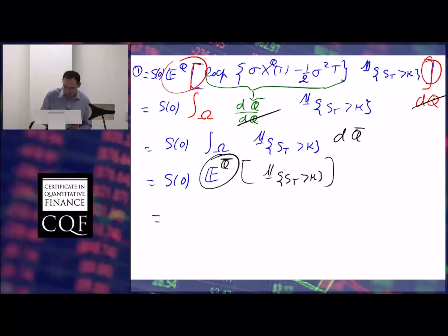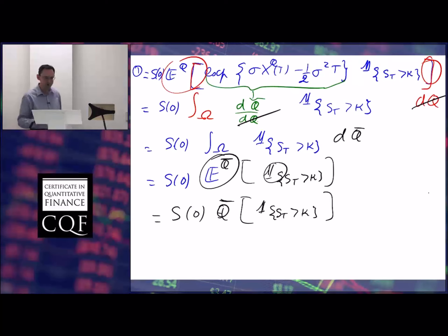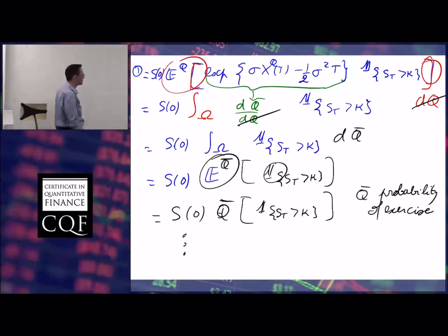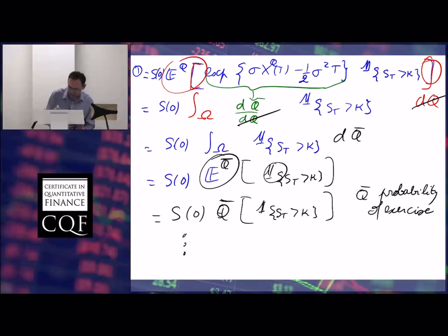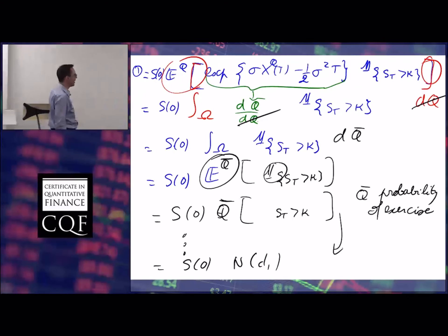We can rewrite that as S0 times the expectation under Q-bar of the indicator function. The expected value of an indicator function is a probability, so that's S0 times the probability under Q-bar that our stock ends up above the strike and our option is exercised — so this is the Q-bar probability of exercise. Following the same steps as before, this corresponds to S0 times N of d1. So N of d1 is a probability of exercise, but not in the real world — it's in another world.